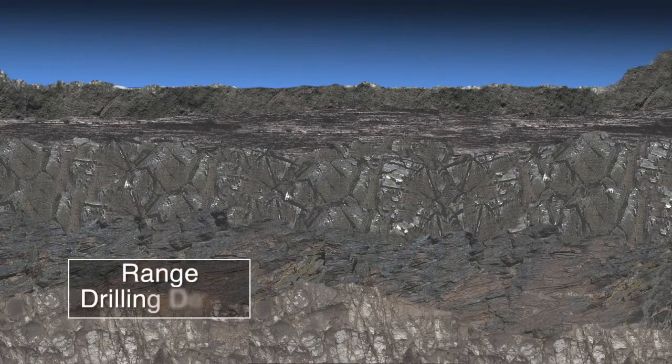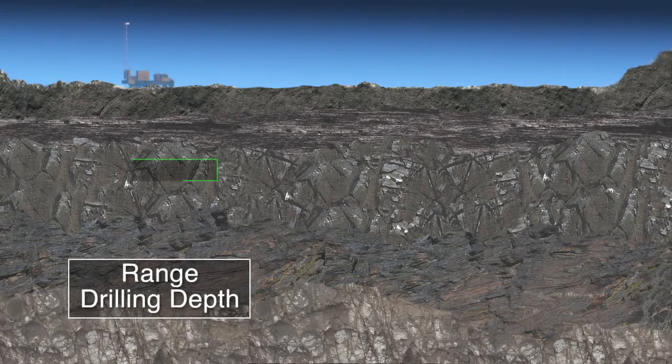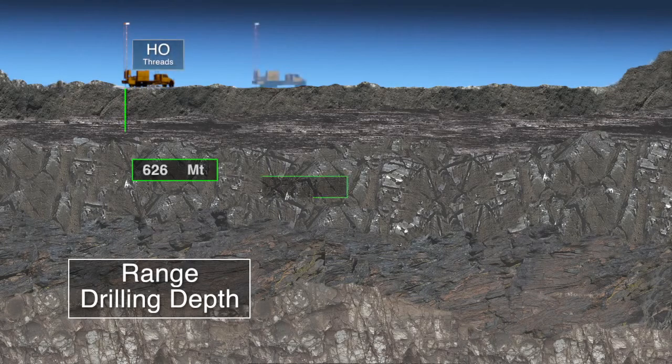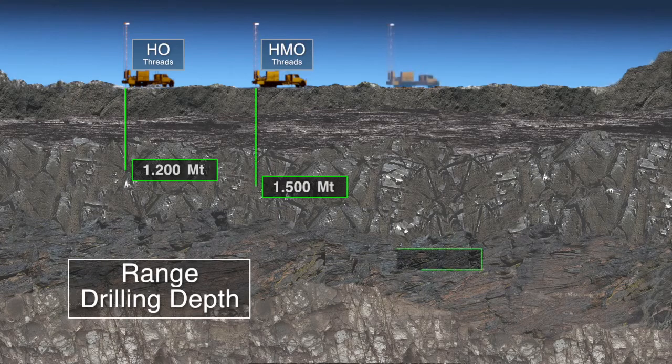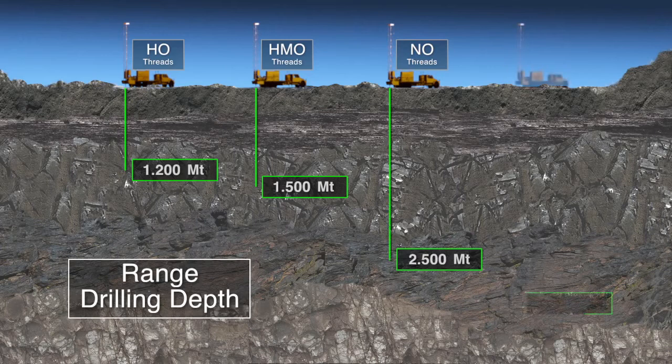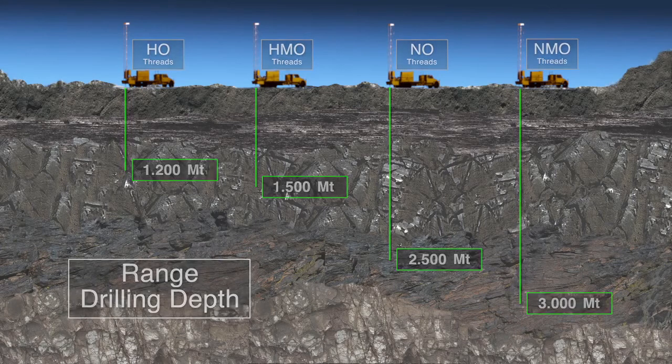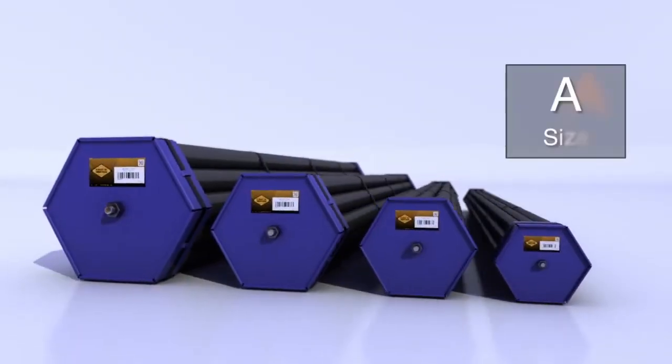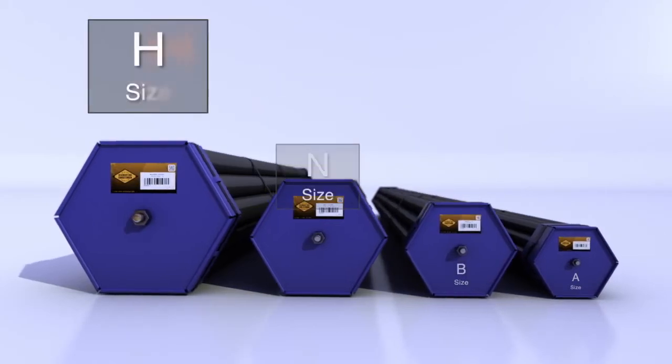Our drill rods are available in various models, depending on different depths to achieve. HO rods reach up to 1,200 meters, HMO rods up to 1,500 meters, NO up to 2,500, and NMO to 3,000 meters. All of them are available in sizes A, B, N, and H.